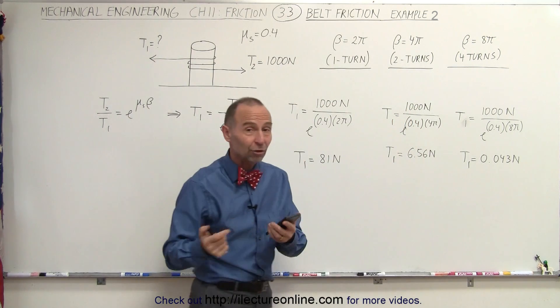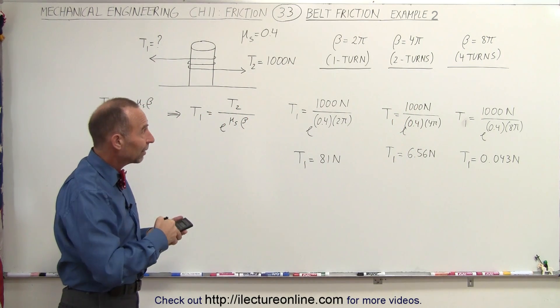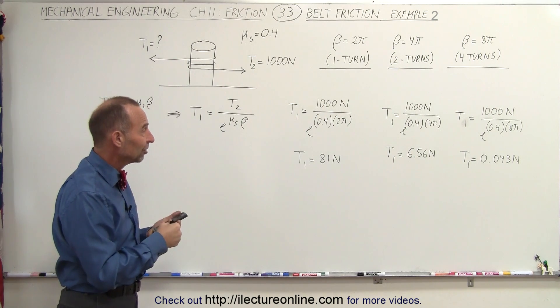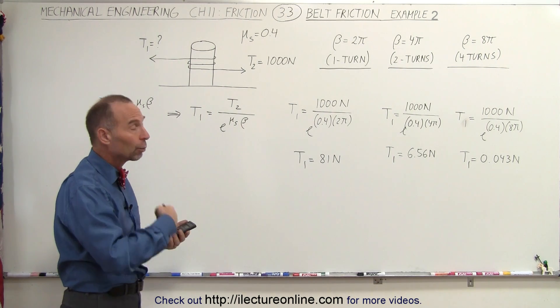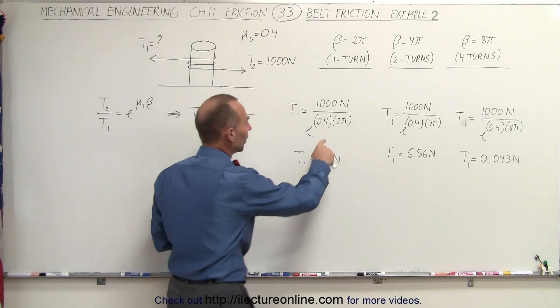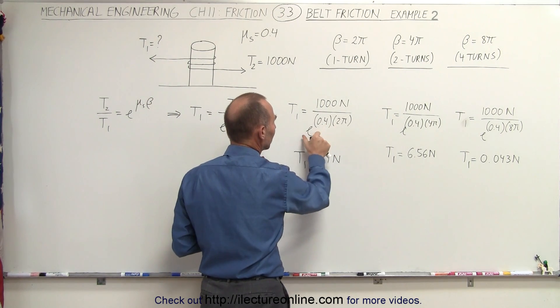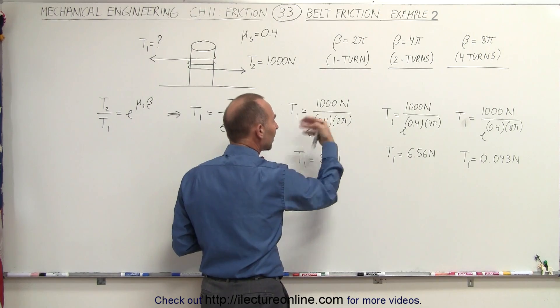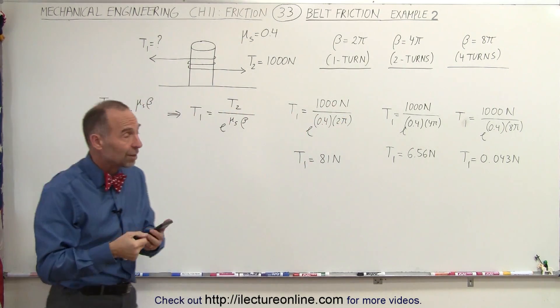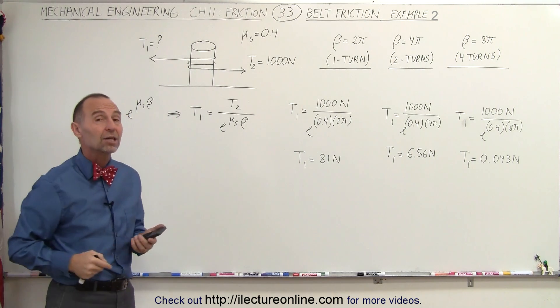Notice that if you compare this to the previous example, that doubling and quadrupling the coefficient of static friction had the same effect as doubling and quadrupling the number turns around the post, because both of them are part of the exponent of the number e. Because of that, the tension required to keep your rope from slipping dramatically decreases.